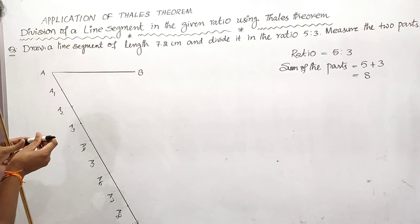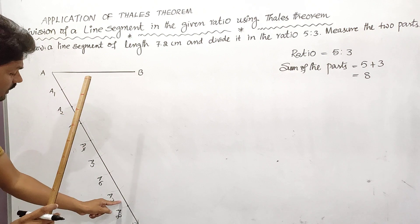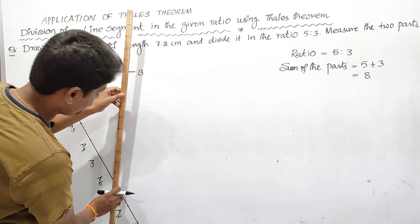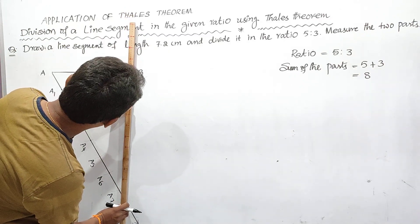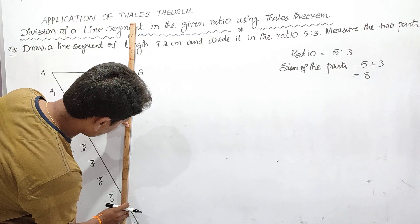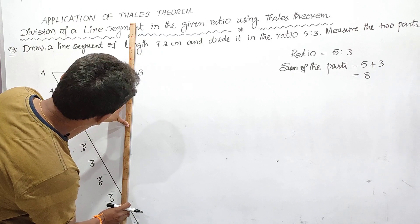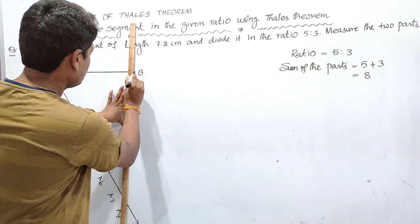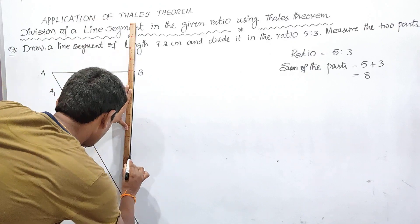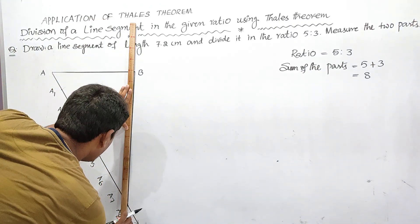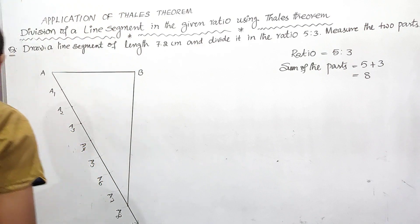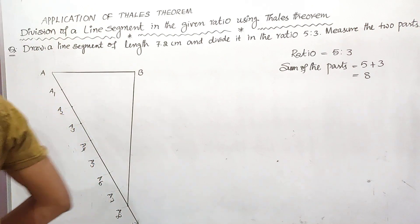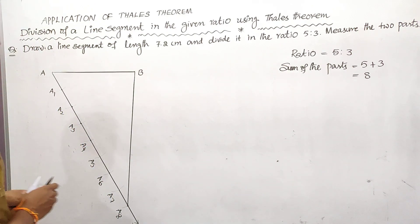After marking off 8 points on the ray AX, we have to join A8 and B — the last point on the ray with point B. With the help of a scale, I am now joining A8 and B.